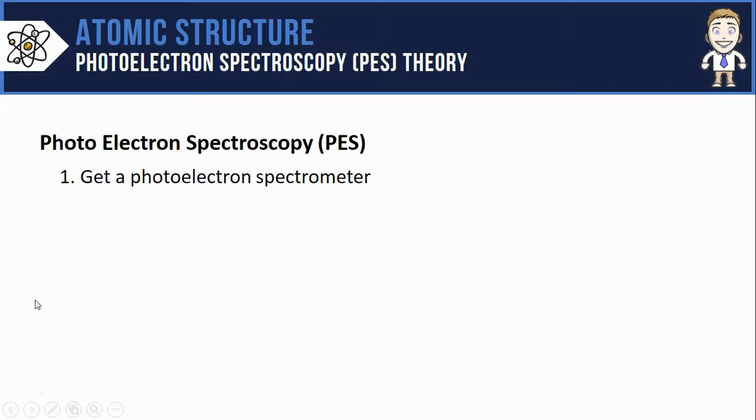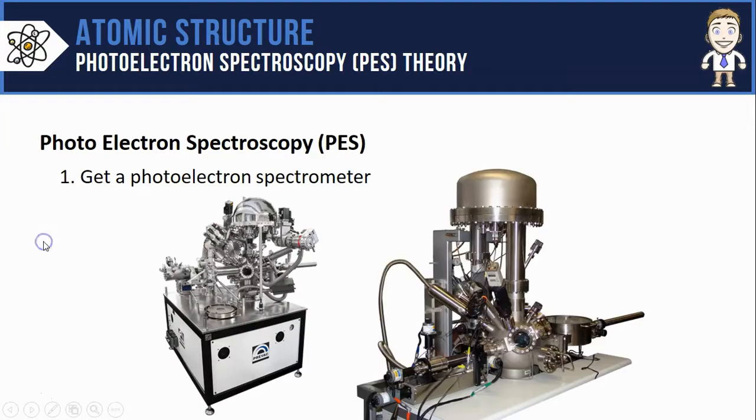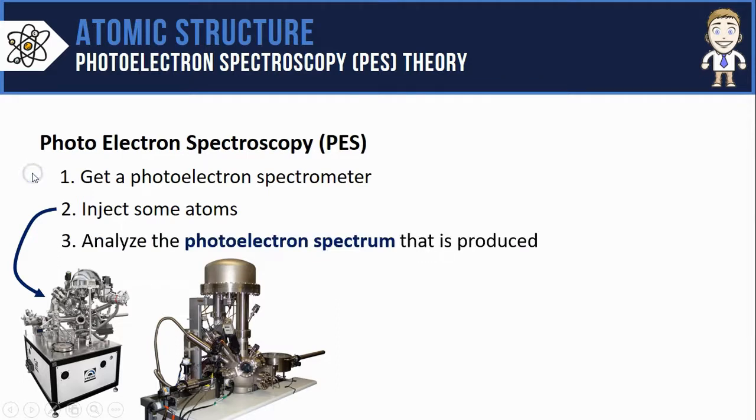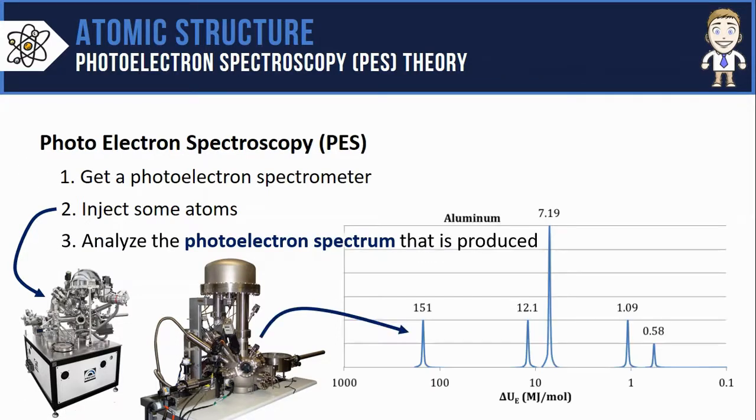The first step to doing PES is to get yourself a photoelectron spectrometer, that's the name of the instrument itself, and it looks something like this. Next you would get some atoms to inject into the spectrometer and with the help of a computer it would produce something called a photoelectron spectrum which you would then analyze in order to determine the ionization energies of the electrons in those atoms.